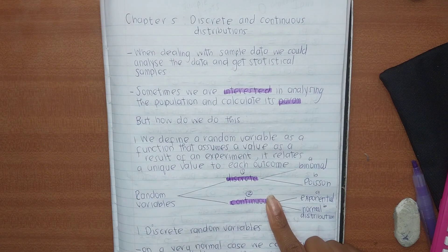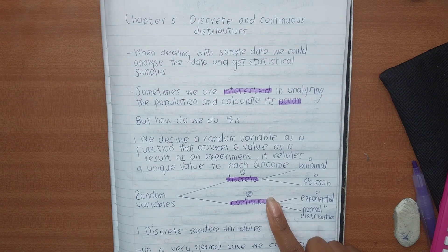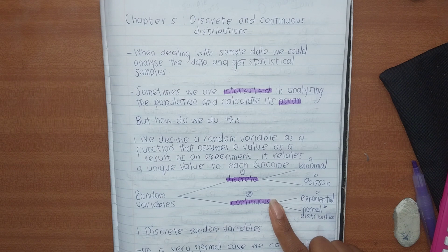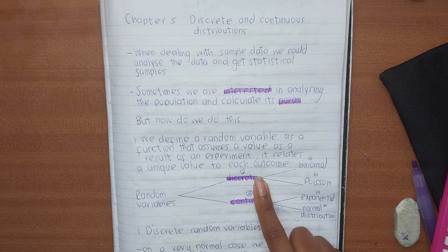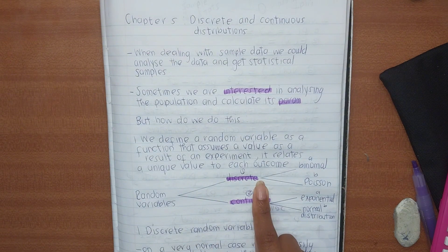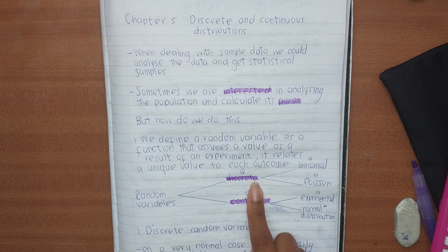We have two types of random variables: discrete and continuous. Think of discrete as objects you can count — you cannot have one and a half person, one and a half laptop, or one and a half book. You can have one, two, three, four people or books. In discrete variables we are counting, and the values cannot have decimals. I like to think of discrete data as whole numbers — you will only find whole numbers under discrete.